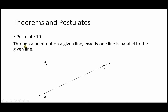Postulate 10: through a point not on a given line, exactly one line is parallel to the given line. Same setup — line BC and non-included point A. Draw a line parallel to BC going through point A; you can call it AD. This introduces the notation for is parallel to: two vertical lines. So line AD is parallel to line BC. The point of this postulate, like the previous theorem, is that no other line could go through the specified point parallel to the given line — only this one.